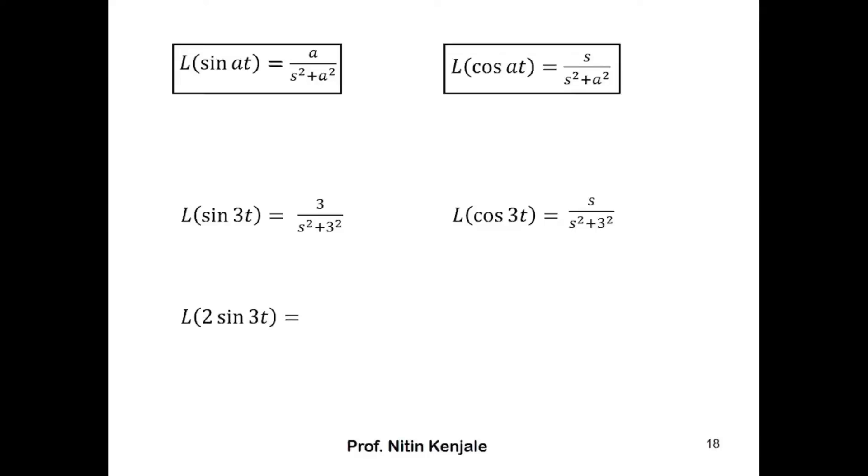Let me give you another example: Laplace of 2 sin 3t. You can take out this 2 as it is constant. It will be 2 times Laplace of sin 3t, and we already know what is Laplace of sin 3t: it is 3 upon s squared plus 3 squared. So the final answer is 2 times 3 upon s squared plus 3 squared.